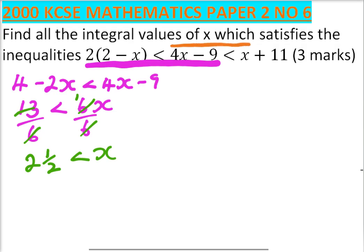We say 4x minus 9 is less than x plus 11. So let's take x to this side, it becomes minus. So 4x minus x will give you 3x.